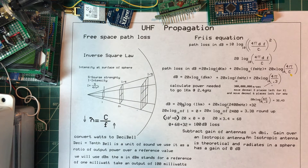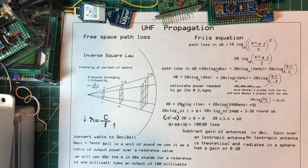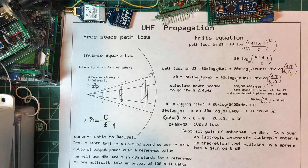We can add these three loss terms together and subtract the gain of the antenna in dBi — decibels over an isotropic antenna. You can't buy an isotropic antenna; it's a theoretical antenna that radiates out in a perfect sphere. This makes our math easy because we don't want to do ellipsoid math — that's where the 4π term came in.